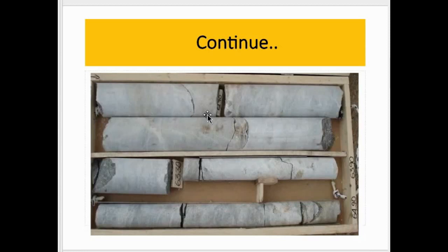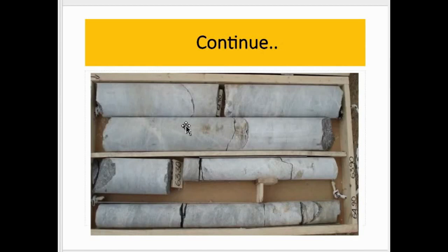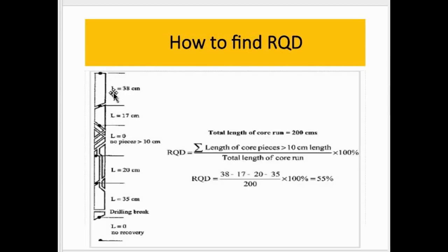As you can see, this is the core recovered from a borehole. We measure the length of each core piece. The first length is 38 cm, then 17 cm. Then there is a fractured section with no core recovery, or pieces less than 10 cm. Then 20 cm, and then 35 cm. This last part is also less than 10 cm.